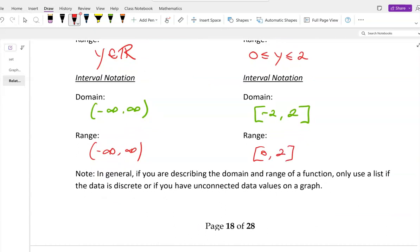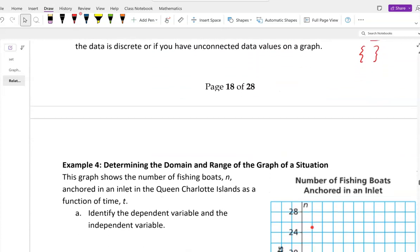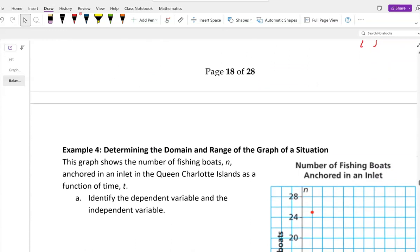Note, in general, if you're describing the domain and range of a function, only use a list. List, I mean, use these brackets. If you have data that is discrete, or if you have unconnected data values on a graph. We'll keep more examples. You'll see what I mean, even right here.